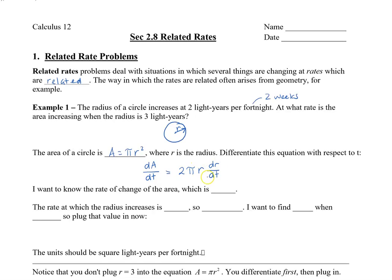We're actually using the chain rule when finding related rates. I want to know the rate of change of the area, which is dA/dt, and the rate at which the radius increases is dR/dt. It says the radius increases at 2 light years per fortnight, so dR/dt equals 2.